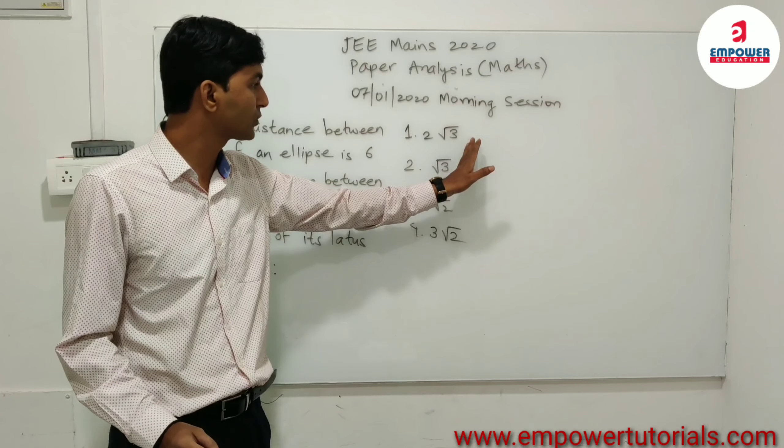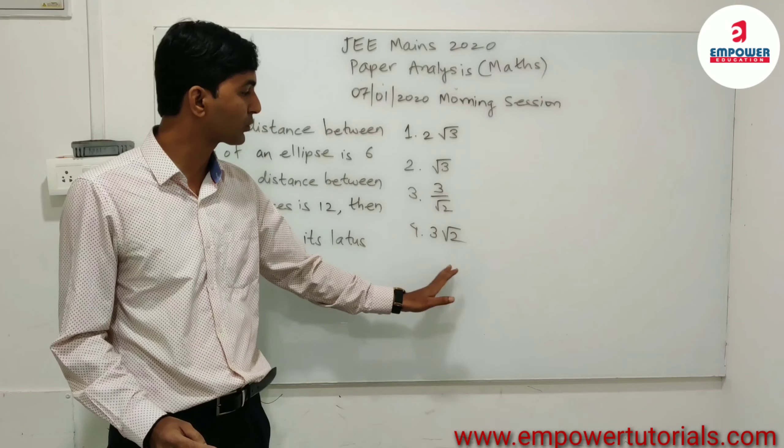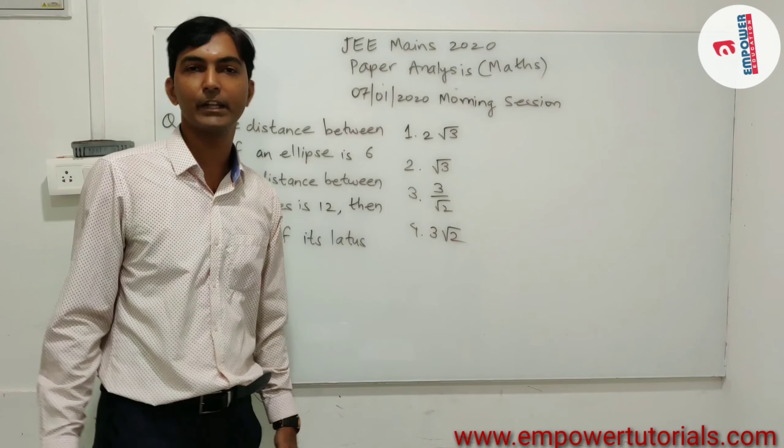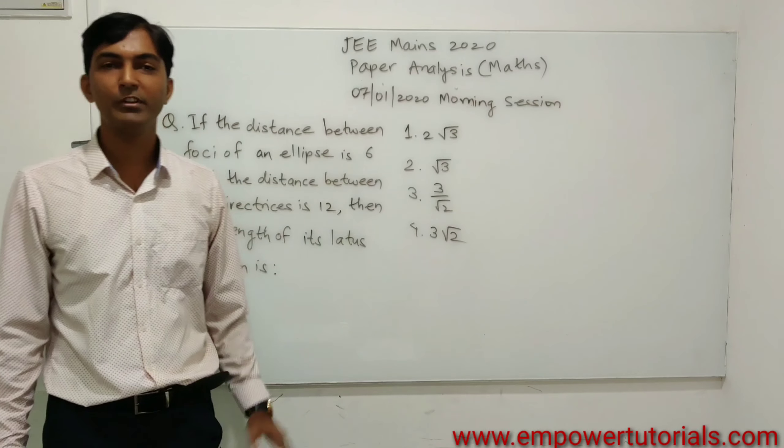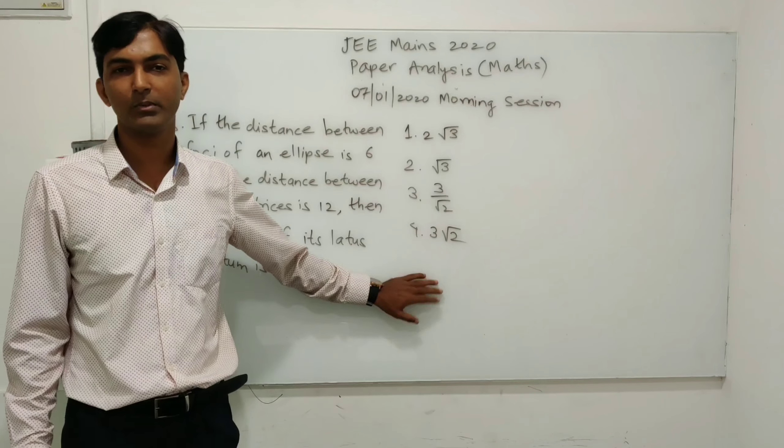The options are: 2√3, √3, 3/√2, and 3√2. We will see how we are going to solve this problem.